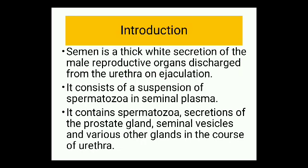Spermatozoa are the only cell type present in normal semen and constitute less than 5% of the semen volume. Thus the seminal fluid is made up of spermatozoa and a wide range of different chemical substances. Any change in any secretion can produce many changes in the appearance of semen as a whole. Semen can also be defined as a concentrated suspension of spermatozoa mixed with secretions from the accessory sex organs — mainly prostate and seminal vesicles, with minor contributions from the bulbo-urethral gland.